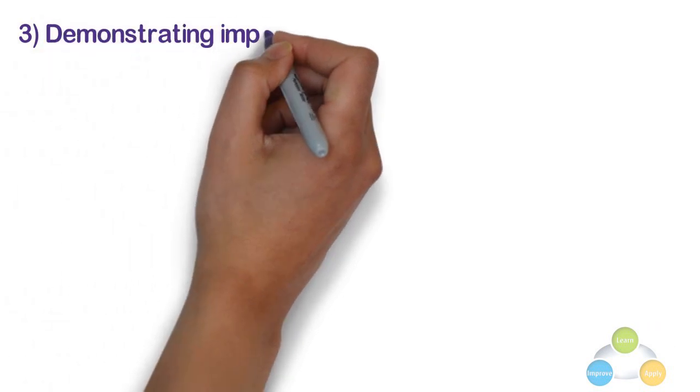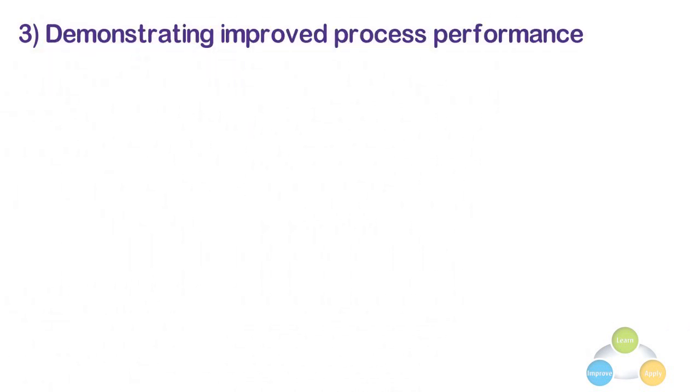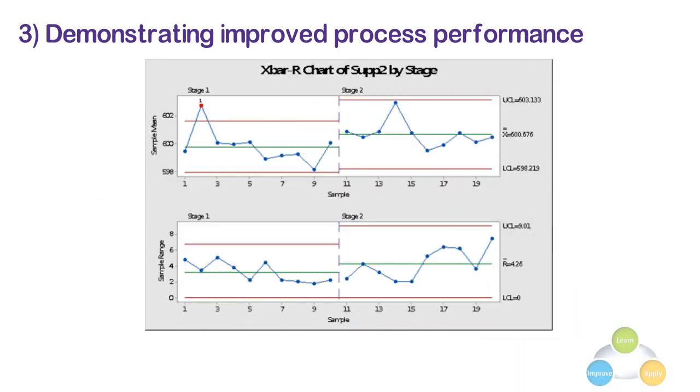3. Demonstrating improved process performance. This is needed to show that a process has been improved or not. Before and after X bar R charts can provide that proof.